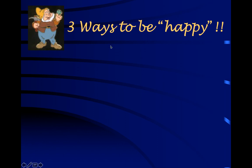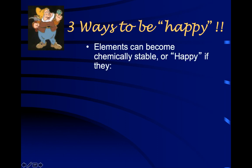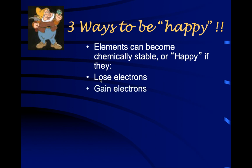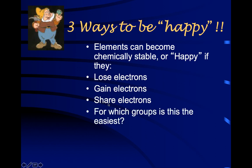If stable is the goal, here are three things an element can do to get stable: elements can lose electrons, or they can gain electrons — these two go together, because if something is gaining, it's because something else is losing. But if no one is willing to lose electrons, then no one can gain, so they have to share electrons. That's the third option.